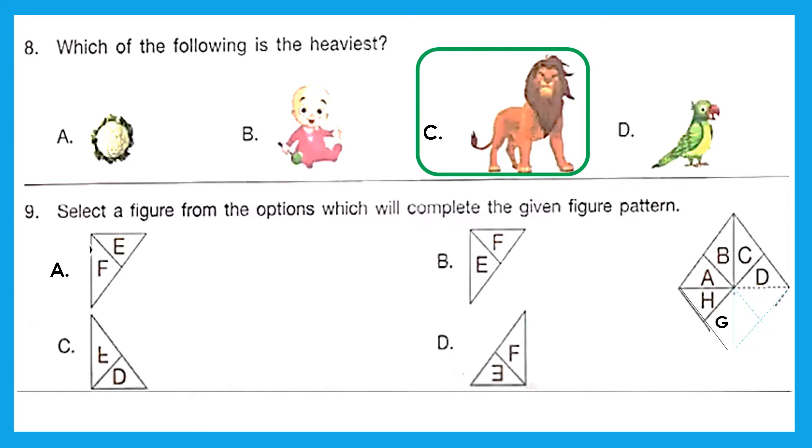Question 9: Select a figure from the options which will complete the given figure pattern. Let's first see the pattern. We have A, B, then C, D, and then there is missing two, and then G, H. So how will it complete? A, B, C, D, E, F, G, H. So here it should be E, F. The right option is option A.